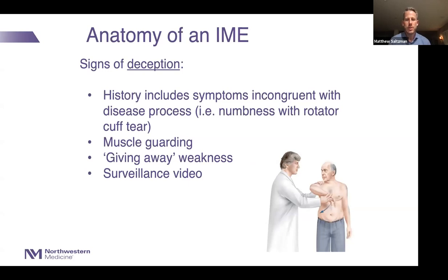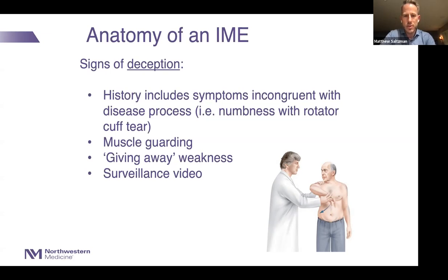One thing to be on the lookout for is signs of deception. This includes a history or symptoms that are incongruent with the disease process — for example, if they have a full thickness rotator cuff tear but their primary complaint is numbness or tingling, that's not consistent. If there's significant muscle guarding and they can't lift their arm but the MRI is normal, that's a sign of potential deception. Giving-away weakness and surveillance video showing far greater function than demonstrated in the exam are also red flags.